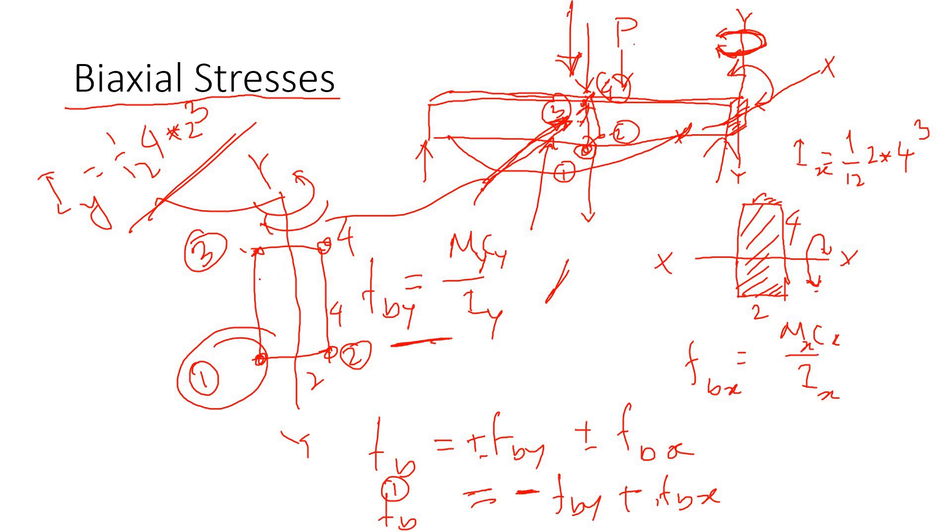C is the distance from the neutral axis to the outer fiber. So c_y is basically 2/2 here, and c_x here is 4/2. I'm using nominal dimension—you should never use nominal dimension in your calculation. This is just for demonstration purposes only.